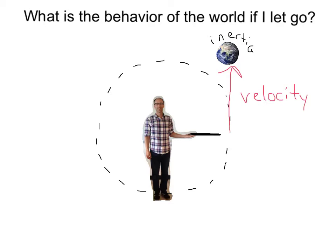Here we can see that when the world was right here, it had a velocity in this direction — upward — and its inertia is going to want to maintain its motion in this direction. Now, what if I let go of the world when it was right here? You can probably see that the world will continue in this direction, assuming my circular motion is this way. Again, its velocity is this way and its inertia would keep it going that way.